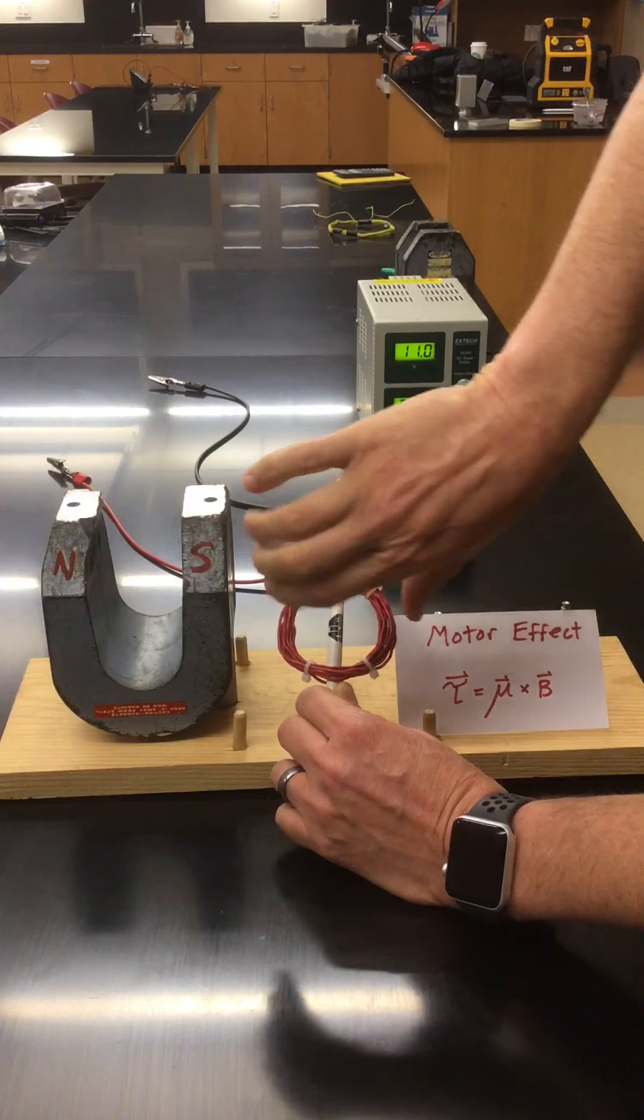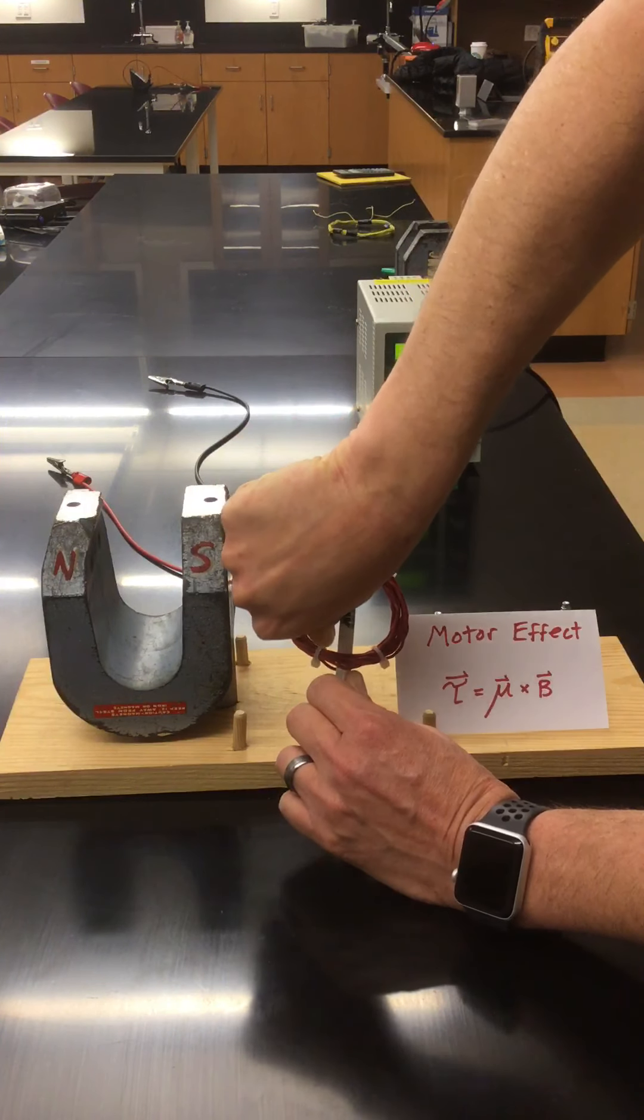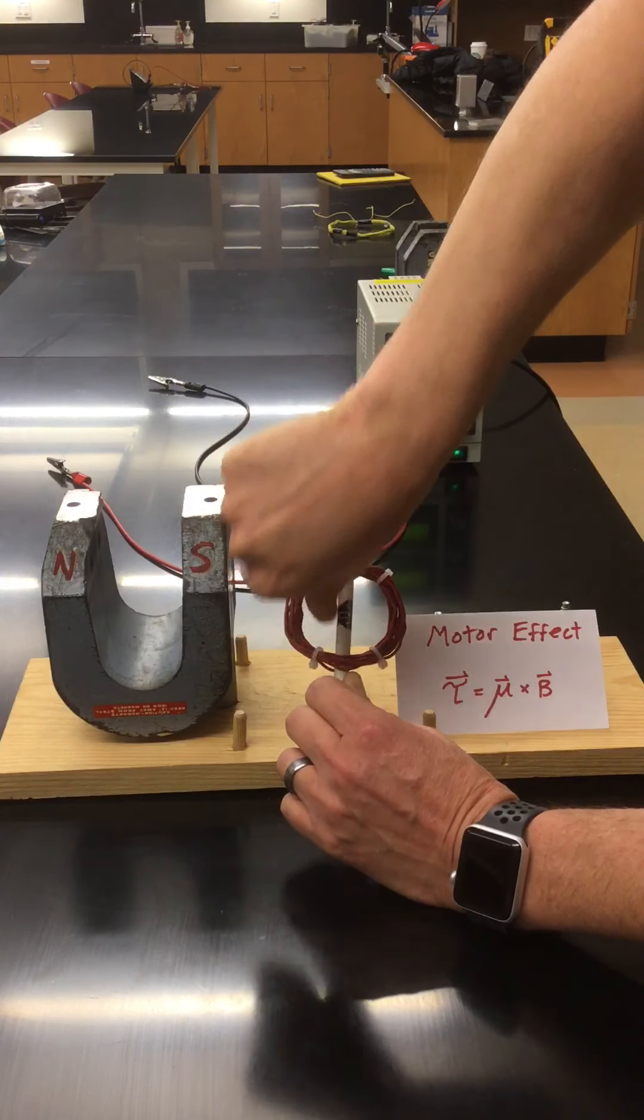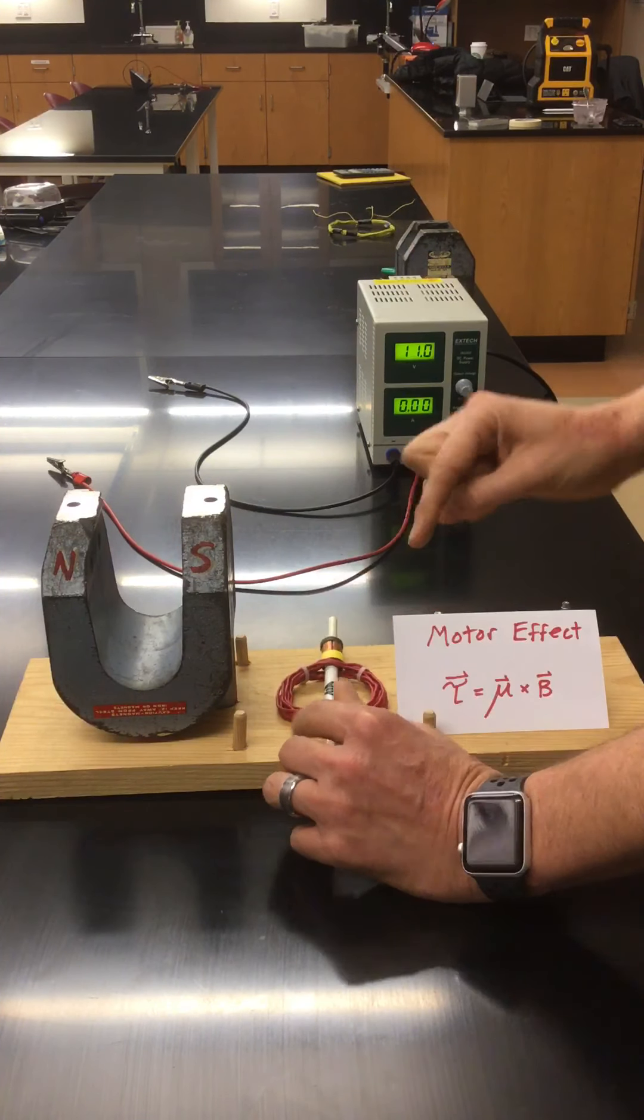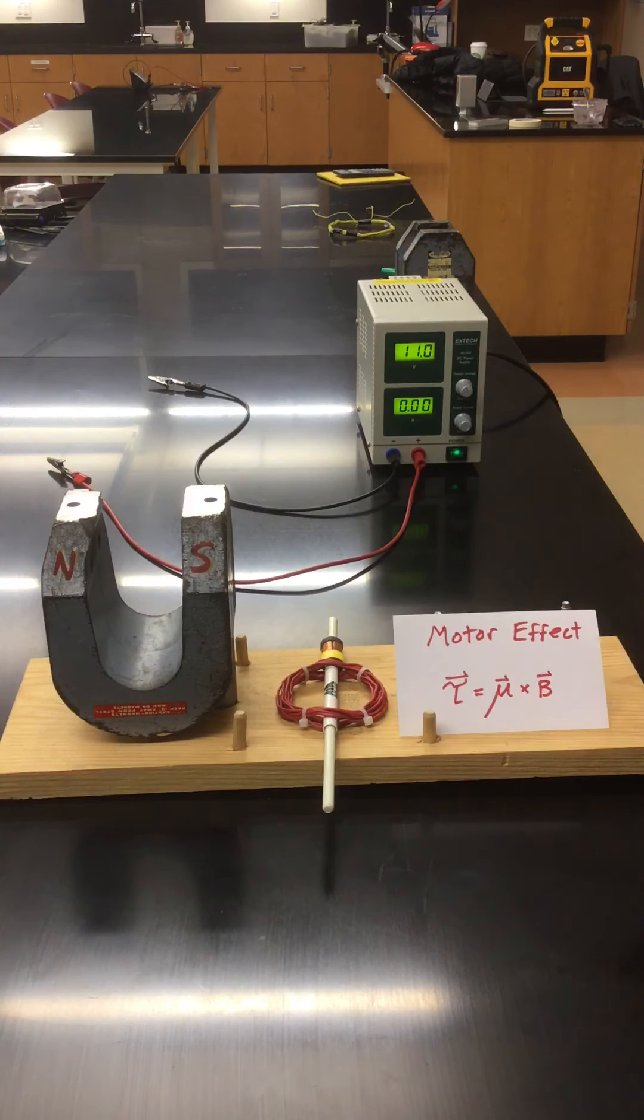And likewise, if the current was flowing clockwise, then we would say that the dipole moment points that way. Okay, so let's see if this really works, if we can get a torque acting on the current loop.